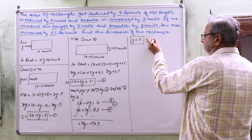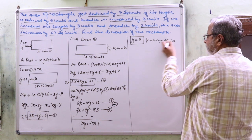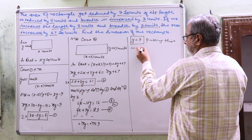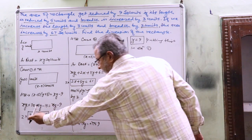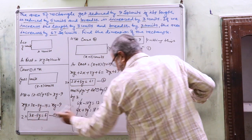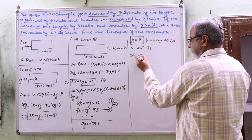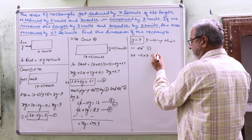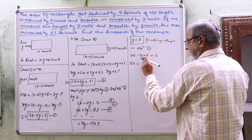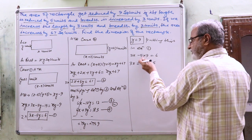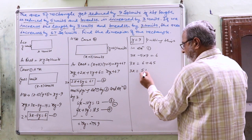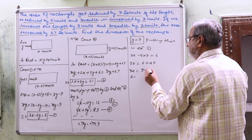Putting y equals 9 in equation 1: 3x minus 5 into 9 equals 6, so 3x equals 6 plus 45, transferred to this side, and 3x equals 51, so x equals 17.